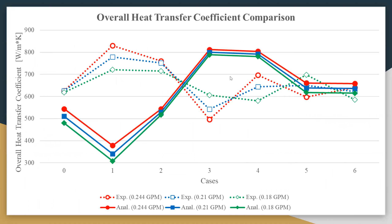This is the plot for the overall heat transfer coefficient for three different flow rates. The dotted line is experimental values and the solid line is analytical. Heat exchangers 3 and 4 came out to have the best overall heat transfer coefficient. The difference in values is because we neglected the cross flow part.